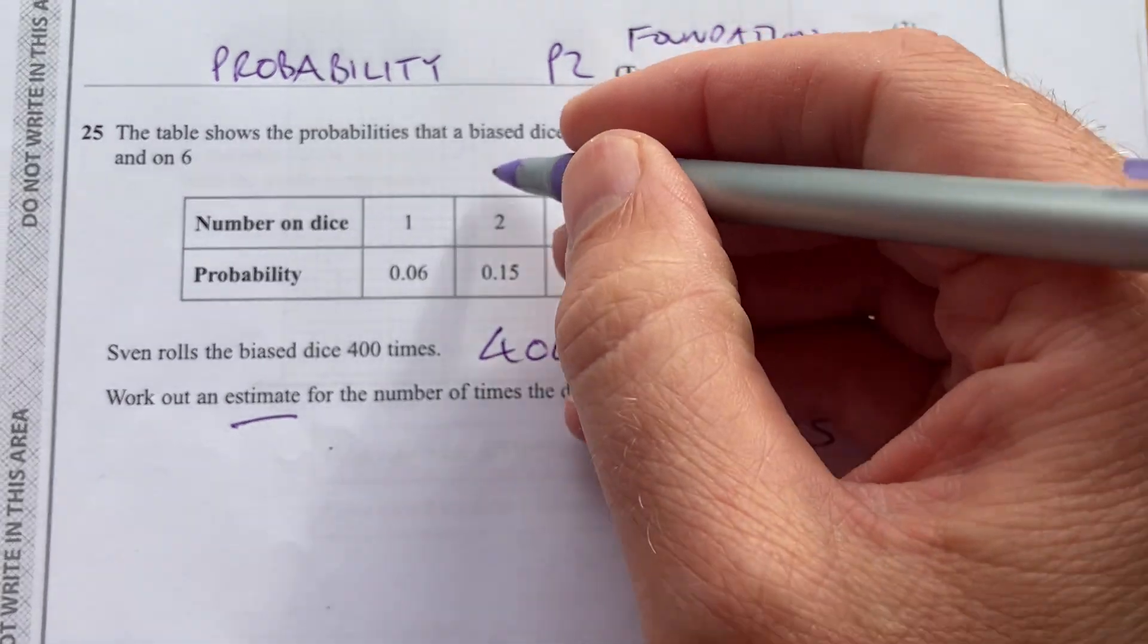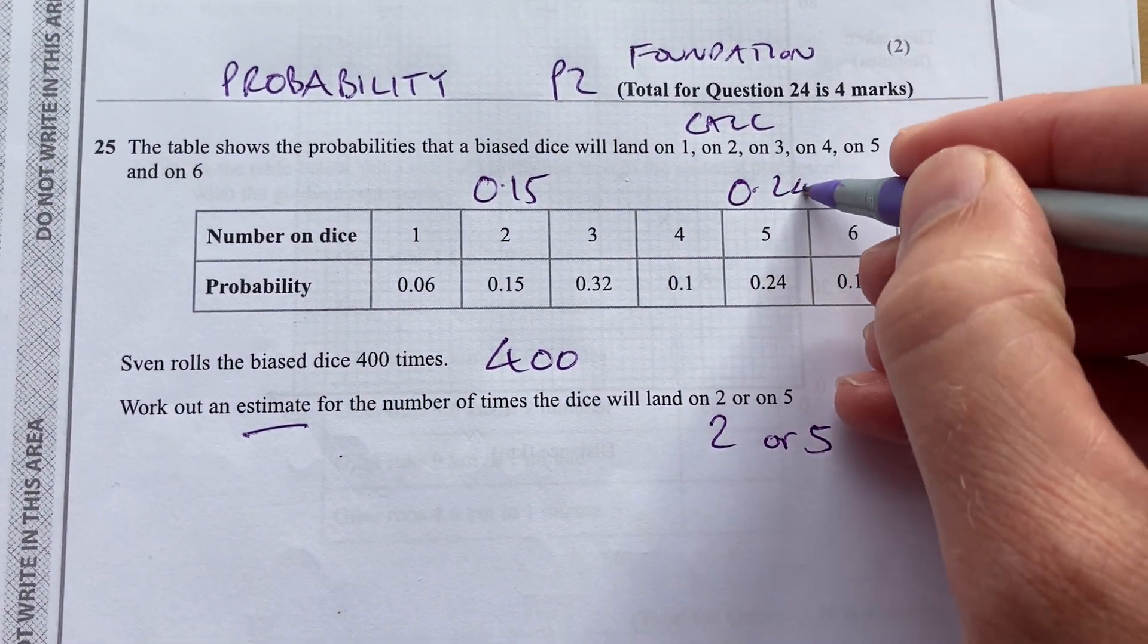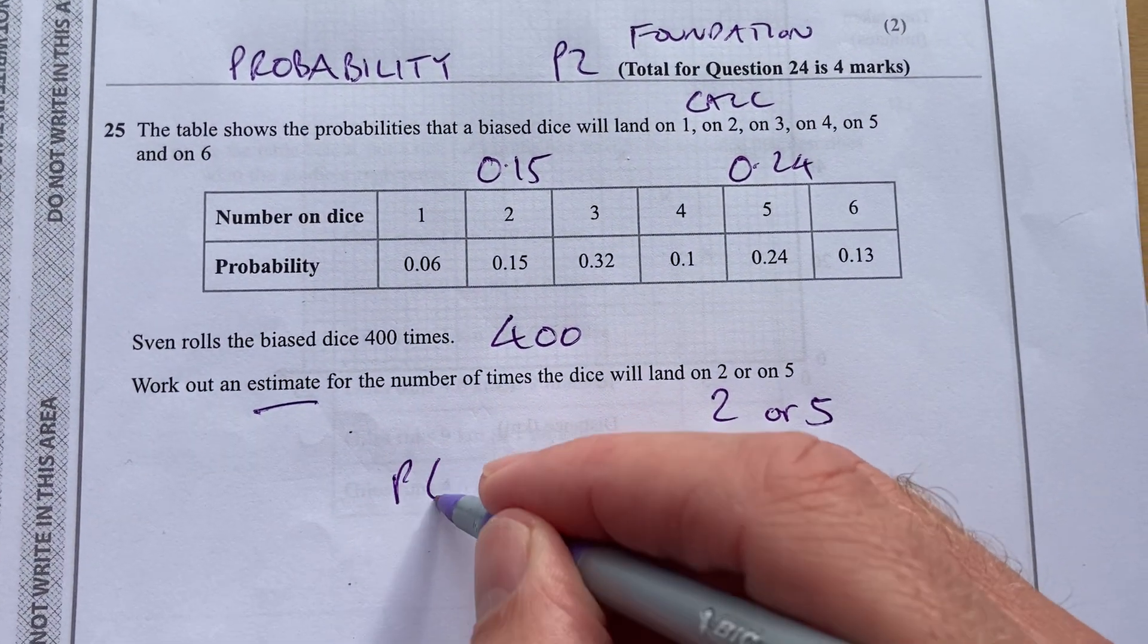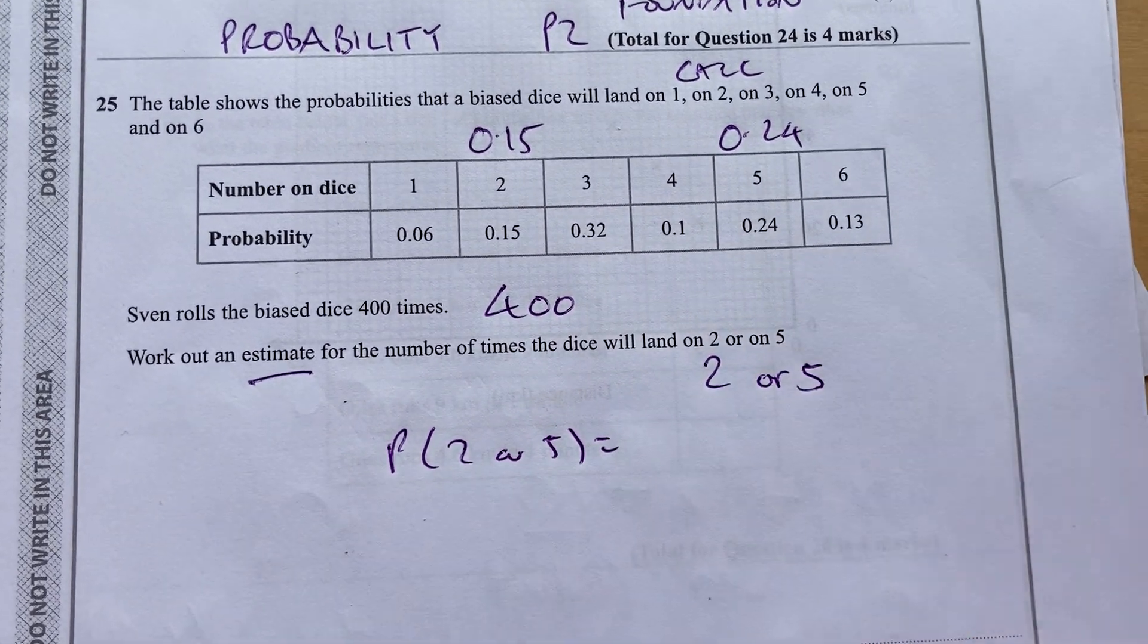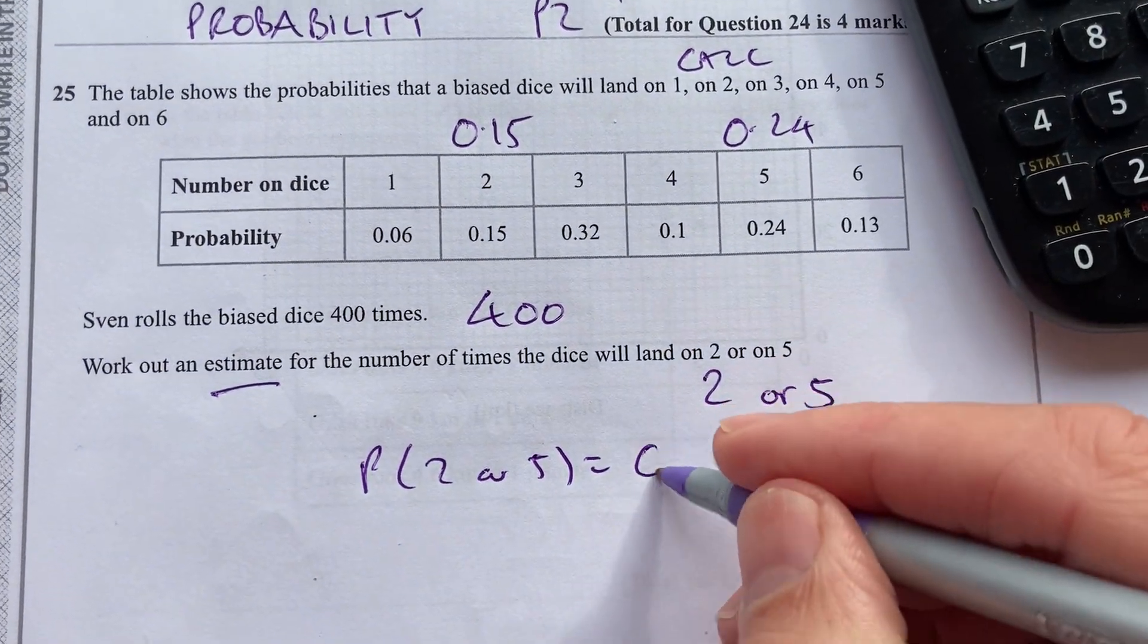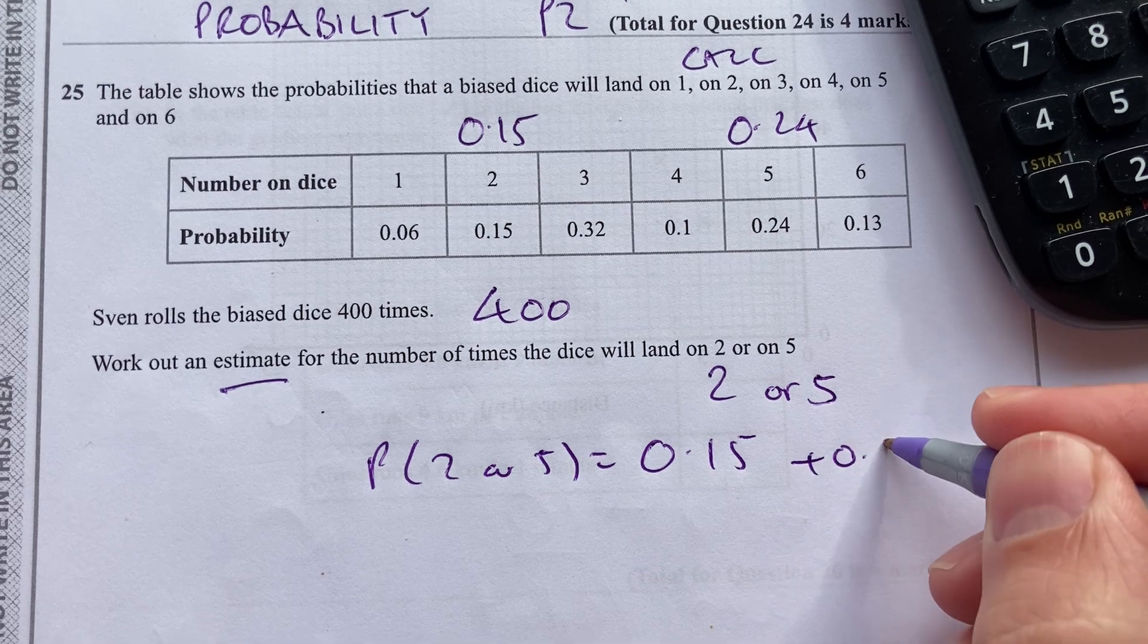So 2 is 0.15 and 5 is 0.24. So the probability of 2 or 5 is going to be 0.15 plus 0.24.